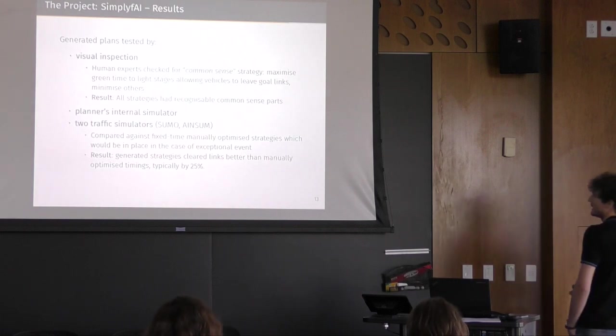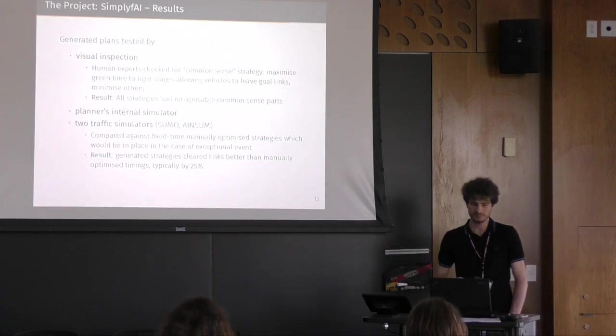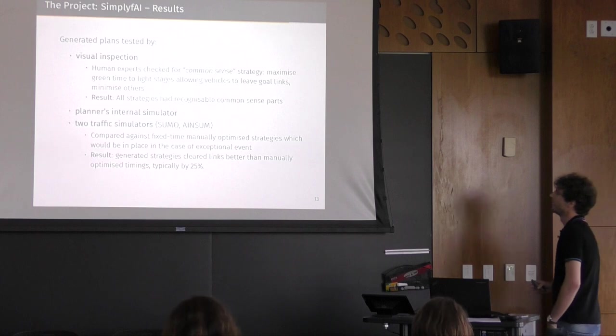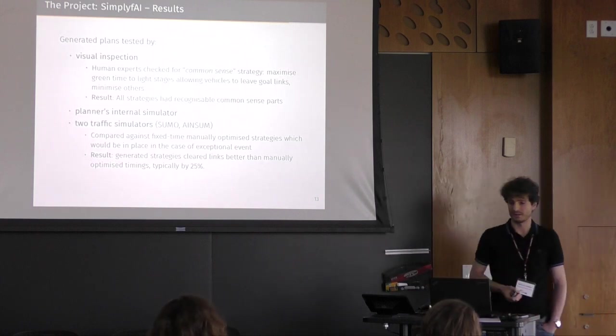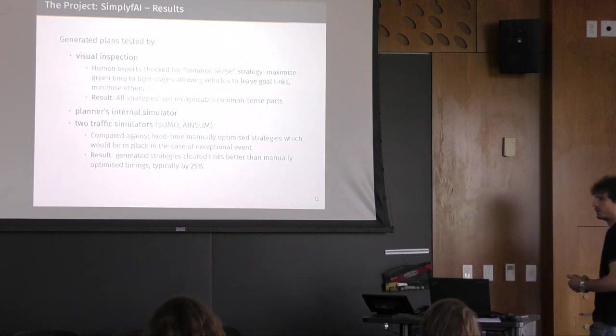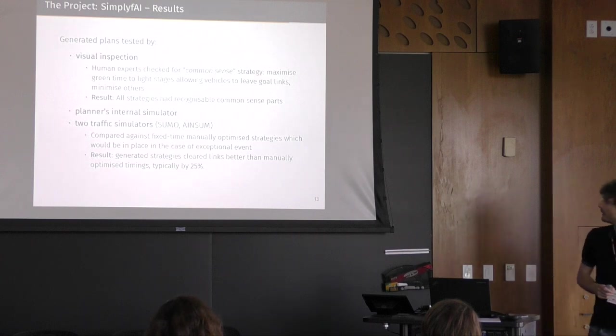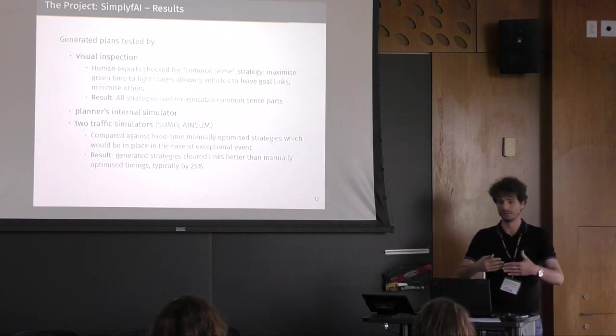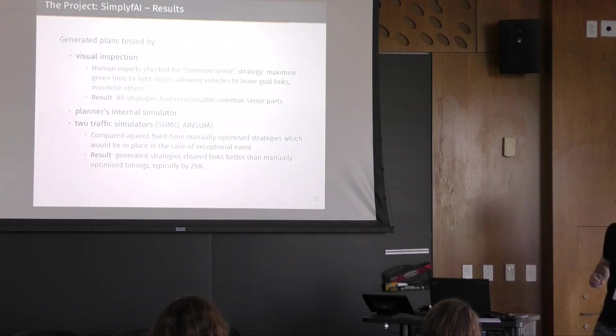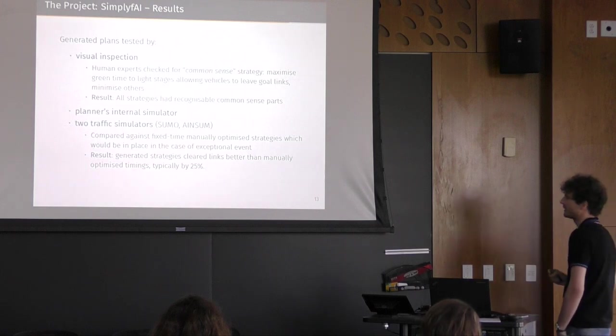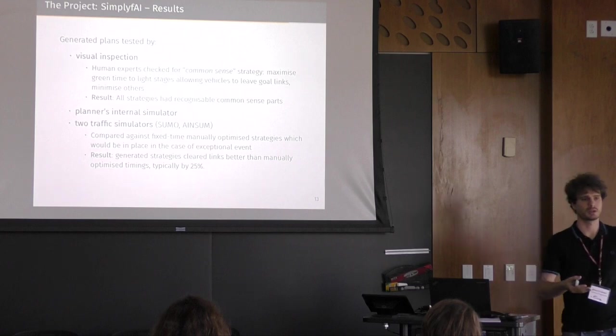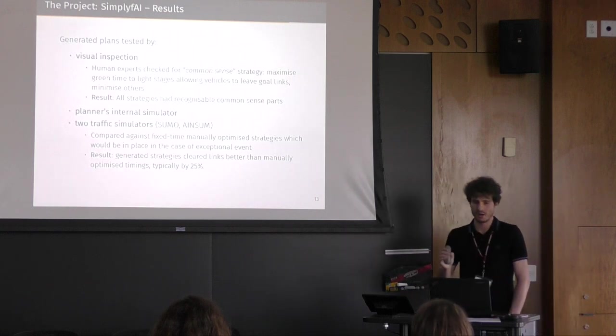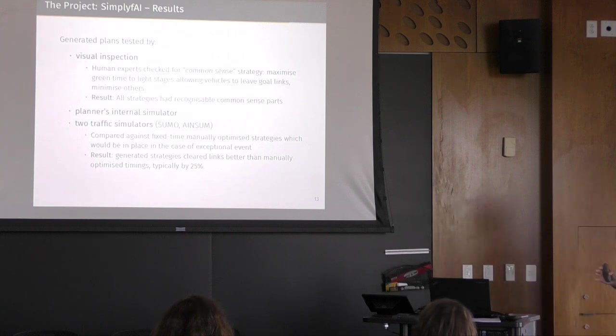And how did we test, how did we validate the results? In three ways. First one was visual inspection. So we had the traffic experts which were taking a look at their plans and says, okay, that makes sense. Or no, that's something we wouldn't have done. And as a result, we had that all the strategies generated had recognizable common sense parts, which basically means if I have to decongest a link, I'll try to maximize the green light for that specific link. Then we use the planner's internal simulator. So we run UPMurphi by telling it that no junction was controllable and that was generating two different plans. And then we use traffic simulator SUMO, which is the most, let's say, academic oriented, and aimsun SUMO, which is actually used by Transport for Greater Manchester for checking their plans before putting them in place. And we observe that in general, according to the goals which were set, we were able to clear the areas typically in 25% less time.